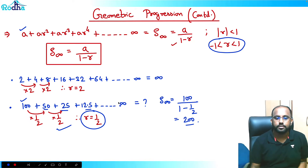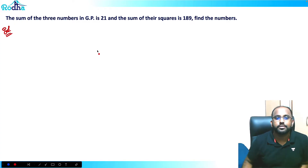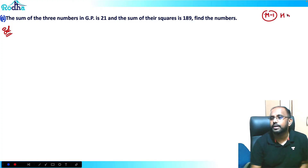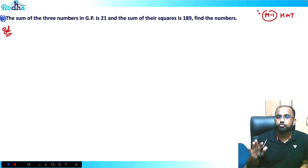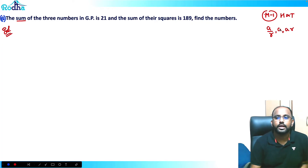Let's do a practice question. The sum of three numbers in GP is 21, and the sum of their squares is 189. In such questions there is a hit-and-trial method, but let's first solve it by the proper method. Since it's a sum and not a product, assuming the numbers as a/r, a, ar is not helpful because r won't cancel in a sum. So this approach is of no use here.